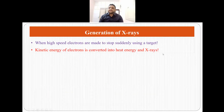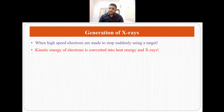How are x-rays generated? X-rays are generated when high-speed electrons are suddenly made to stop on a target. What happens is the kinetic energy of electrons is converted to heat energy and x-rays.